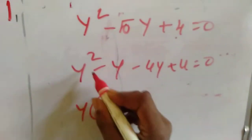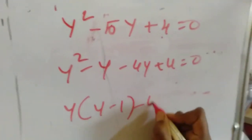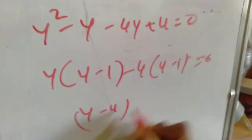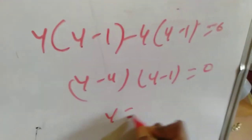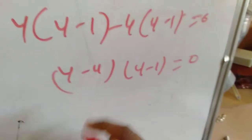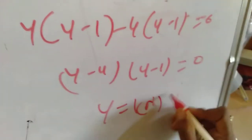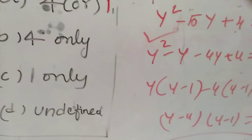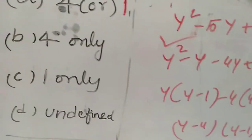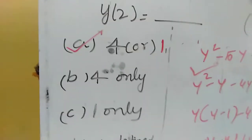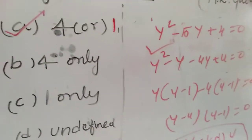Taking y common: y(y minus 4) minus 1(y minus 4) equal to 0, therefore (y minus 4)(y minus 1) equal to 0, giving y equal to 4 or y equal to 1. So the factors of this equation give us y equal to 1 or 4, which corresponds to option A.